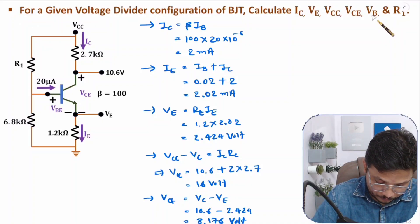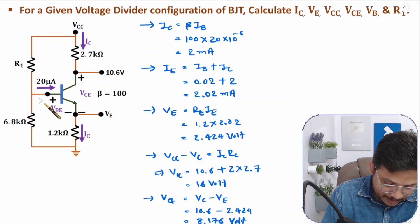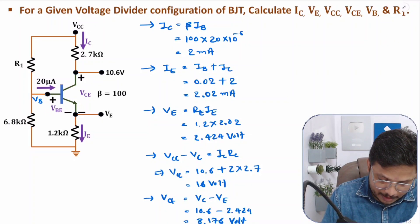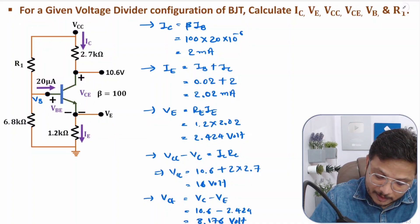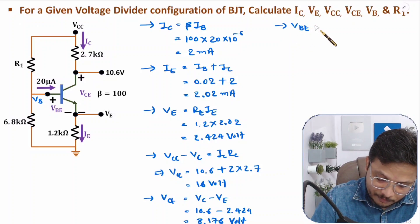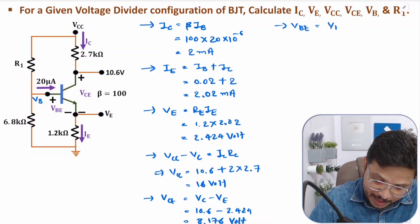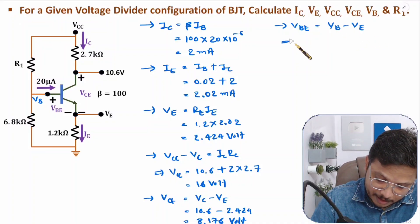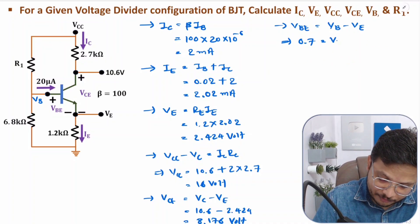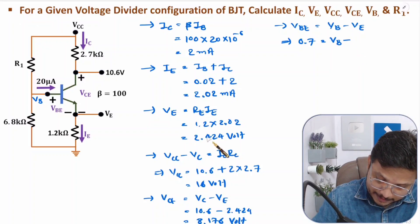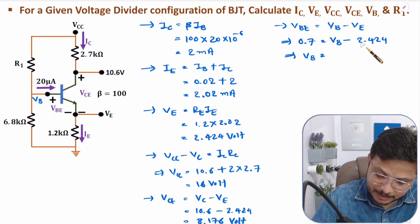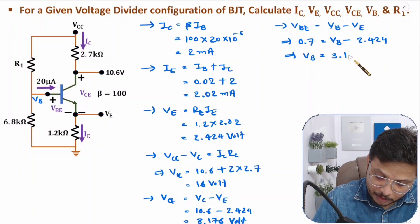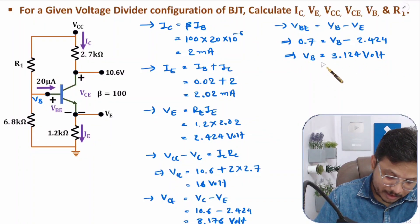Now we need to find VB. VBE for silicon is 0.7. VE we have calculated. VBE equals VB minus VE, so VB equals VBE plus VE, which is 0.7 plus 2.424, giving VB equal to 3.124 volts.